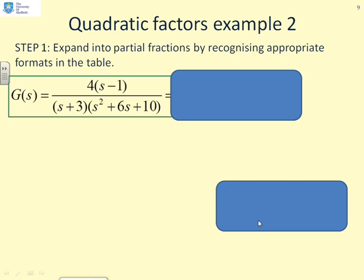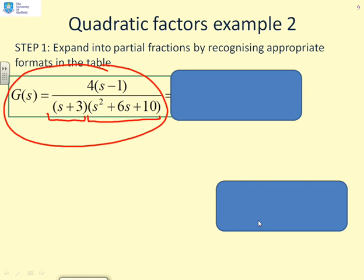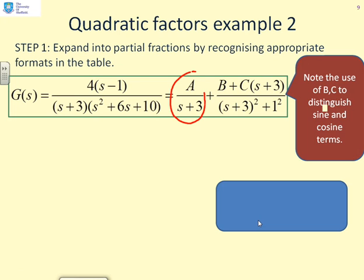Here's a quite nasty-looking transfer function: 4(s−1) divided by (s+3)(s²+6s+10). There's clearly a simple pole, s+3, and a quadratic factor, s²+6s+10. The first thing to do is write the general partial fraction form: a/(s+3) for the simple pole, and (b·1 + c(s+3))/((s+3)²+1²) for the quadratic factor. We've put the quadratic into the form (s+3)²+1² suitable for the table, and written the numerator appropriately — b multiplied by 1 gives the sine term, and c times (s+3) gives the cosine term.